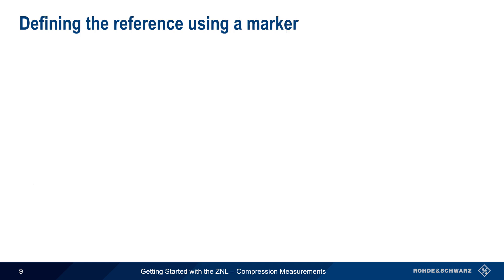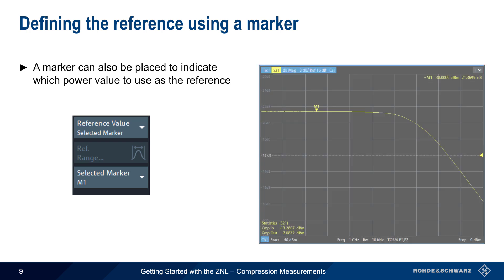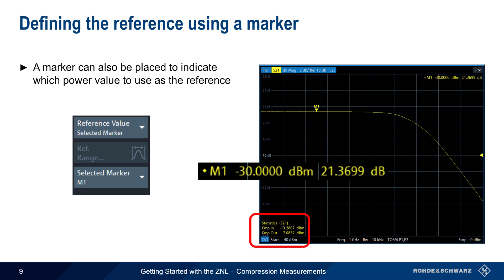The reference value can however also be defined in other ways. For instance, the user can place a marker on any arbitrary point on the trace, and this point will serve as the reference value for the compression point calculations. In this example, a marker has been placed at the point on the trace corresponding to an input power level of minus 30 dBm. The input and output compression points are now calculated using this user-defined point as the reference value.